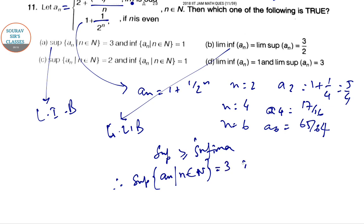So supremum is 3. So this is 3 and 1. So the combination, the first one is your answer. Next questions will be coming as an answer for my next videos. Thank you for watching.